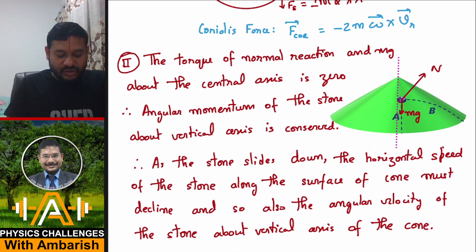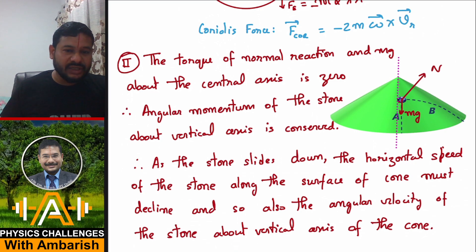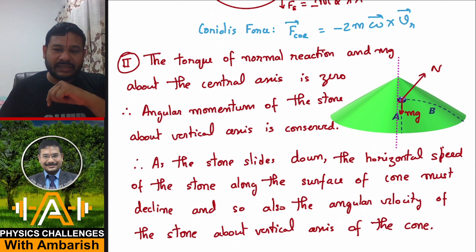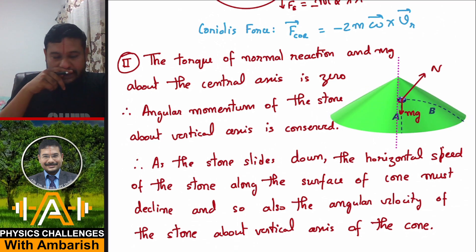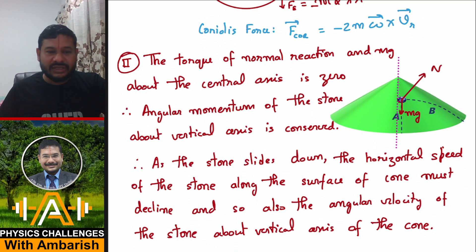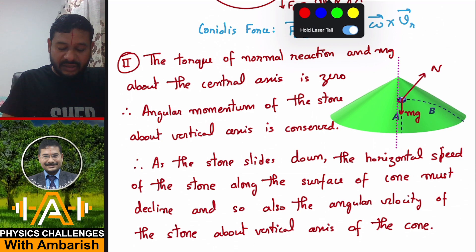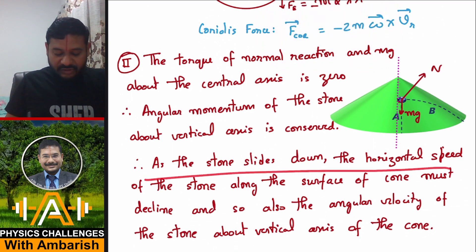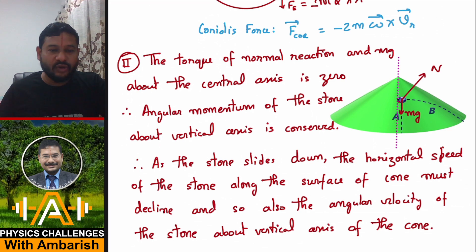As the stone slides down the cone, the horizontal speed along the surface must decline. Since angular momentum is conserved, and the radius is increasing as the stone moves down, the tangential velocity along the circle must decrease — because the product of velocity and radius must remain constant. So the tangential component of velocity along the circle decreases, and similarly the angular velocity of the stone about the vertical axis of the cone also decreases.